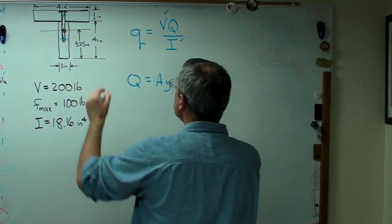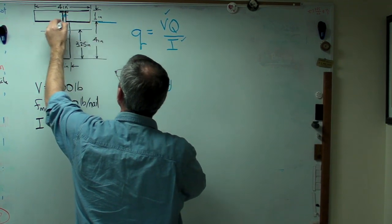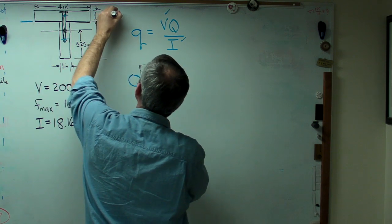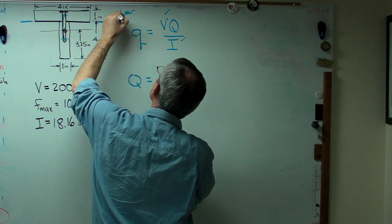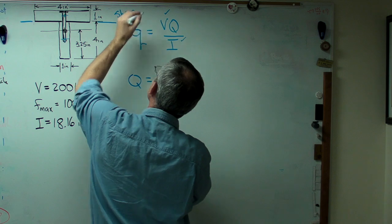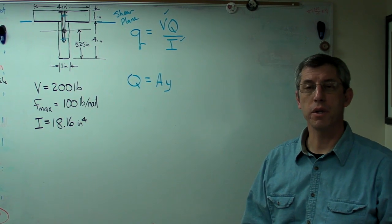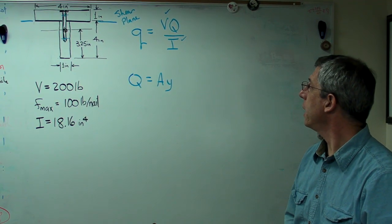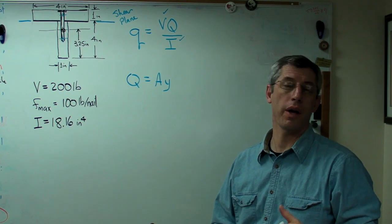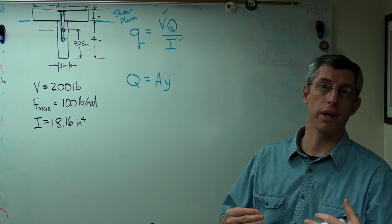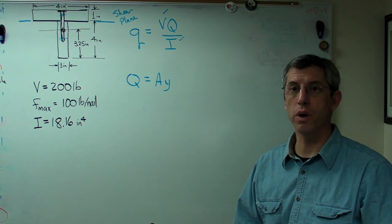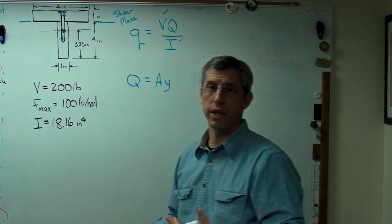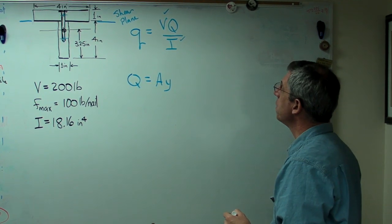We're looking at a shear plane that's right here. It's that interface between the two segments where they're nailed together. And we're interested in either the area above the shear plane or the area below the shear plane. You can use either one for this calculation. And there's only one box in either one of them. It doesn't matter which one you pick.